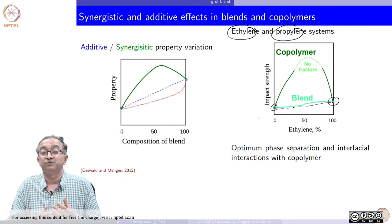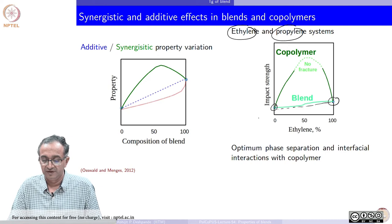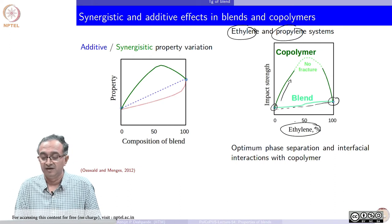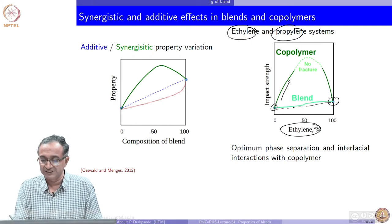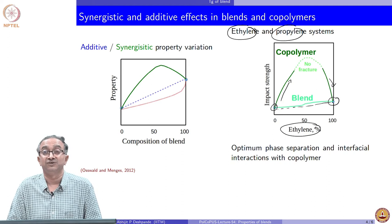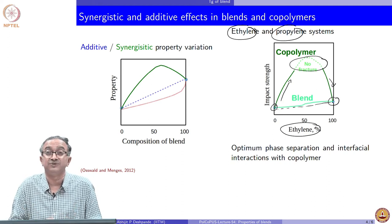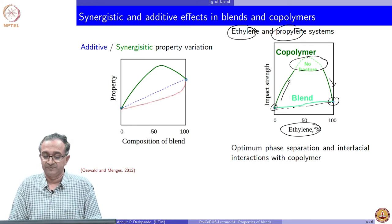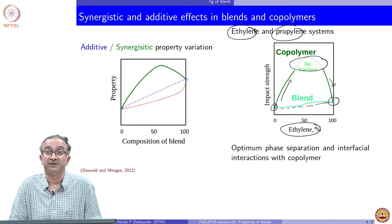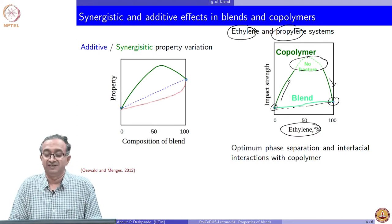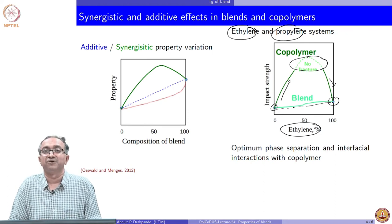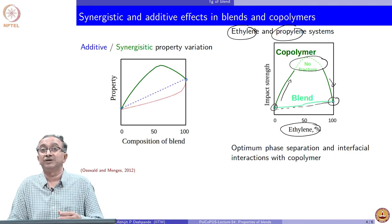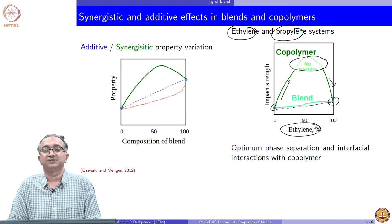But look at what happens when you make a copolymer of ethylene and propylene. In fact, the impact strength goes up very significantly as you start adding more and more ethylene. But if you add too much ethylene, then again, the impact strength goes down. Somewhere in between, in fact, there is no fracture also. The material is so much rubber like and elastomeric like that there is no fracture also observed. Impact strength cannot be measured also under those situations. That is the influence that a synergistic variation can have on the property. Some of this is not possible to be guessed without knowing about what is happening at a macromolecular and microstructural level.